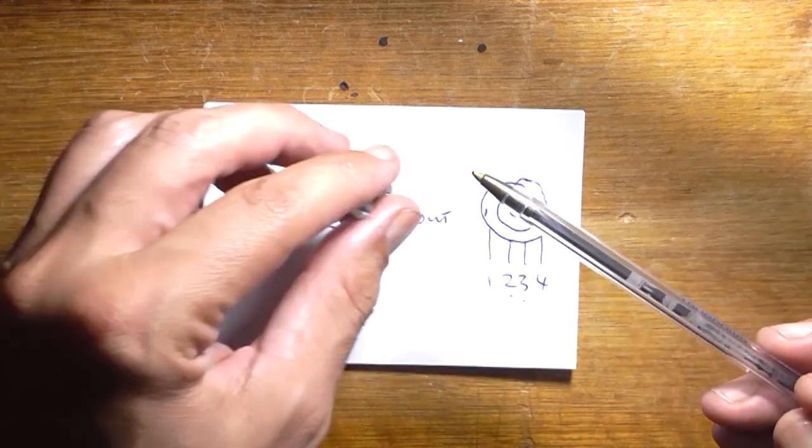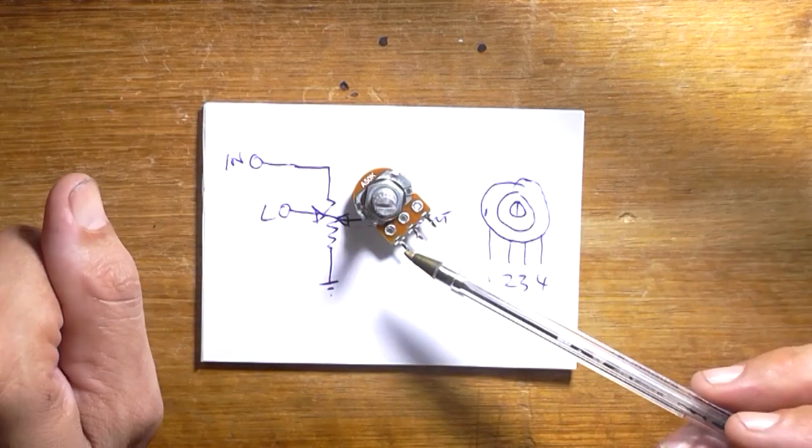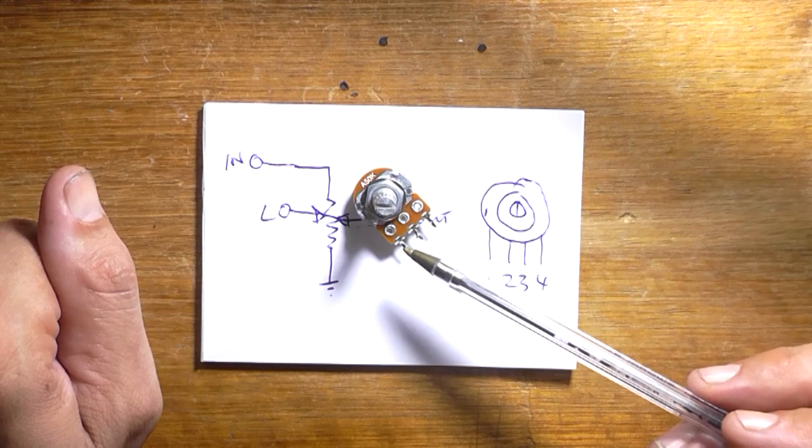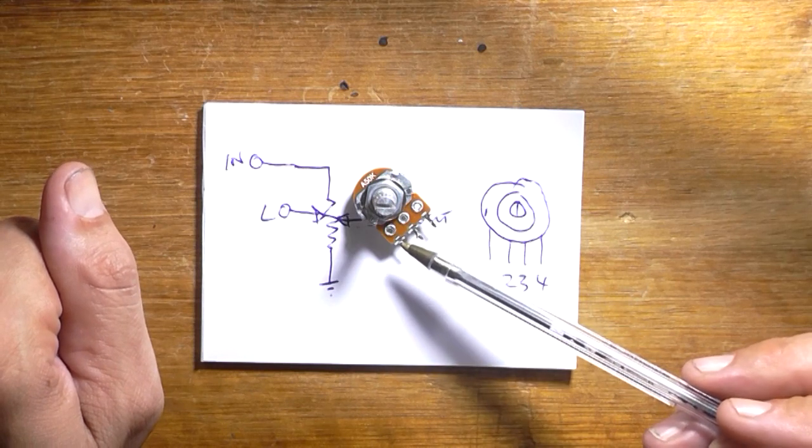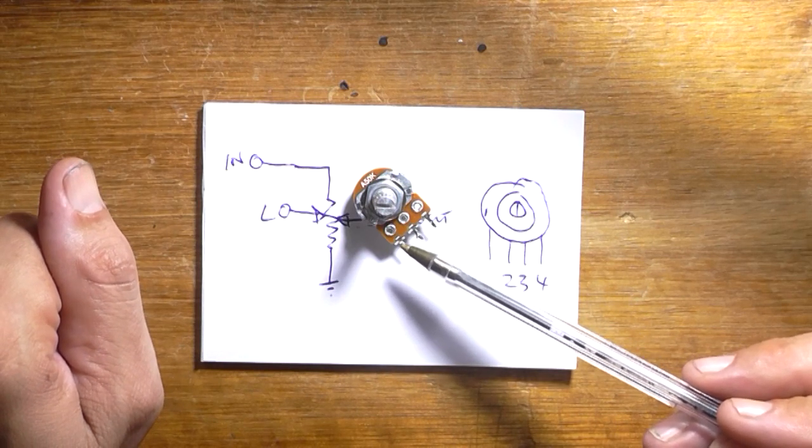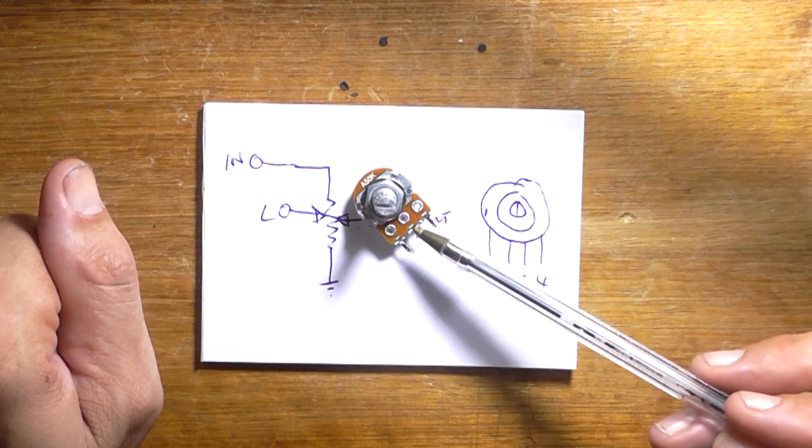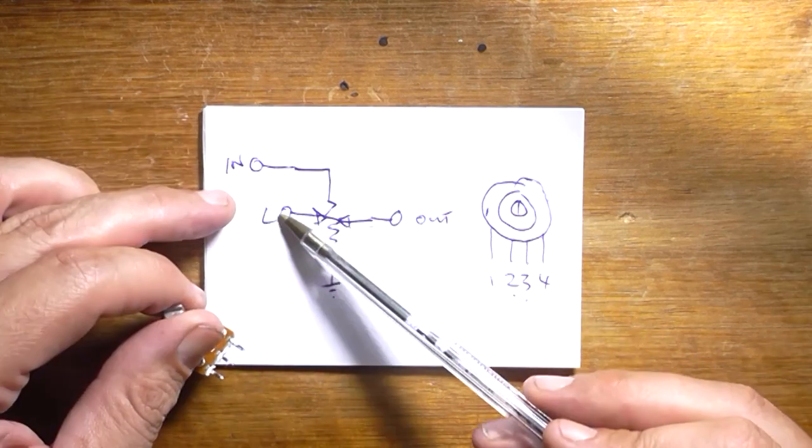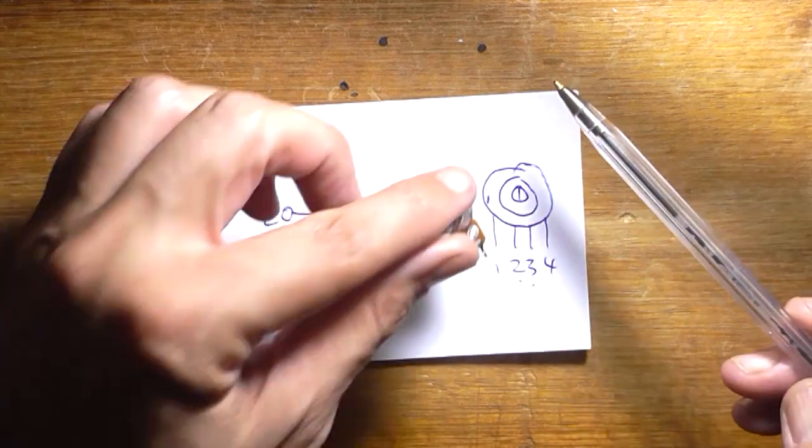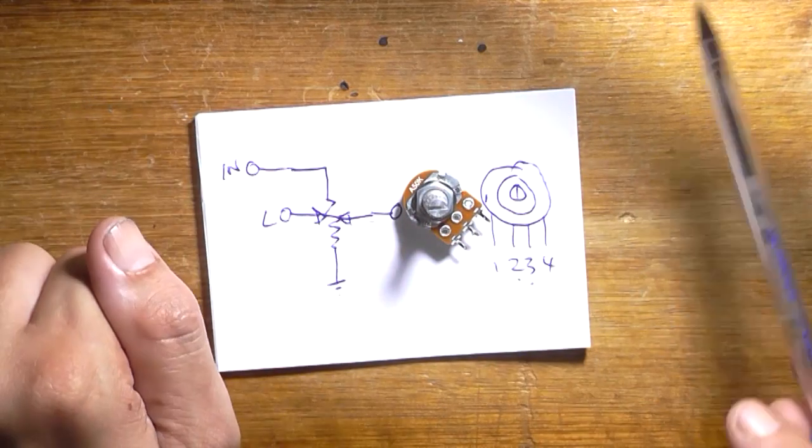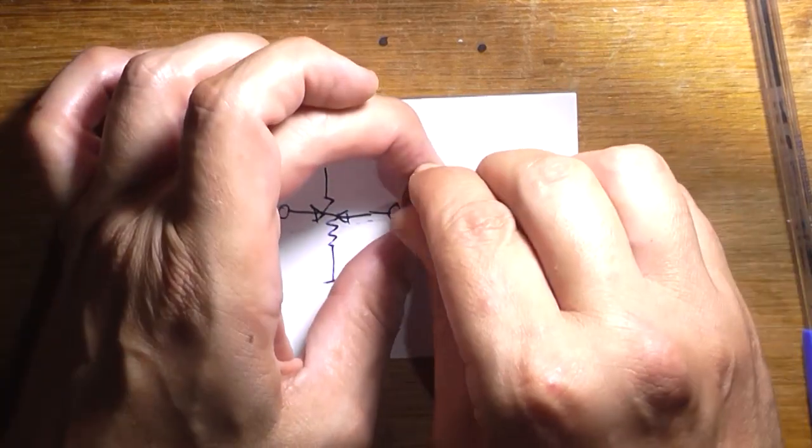Anyway, back to what we're actually focusing on, which is wiring up a volume control correctly. I'm going to set this up with a signal generator and oscilloscope on the correct pins. We're going to ignore this pin now because it's no longer relevant and just see how it operates when we rotate the pot.